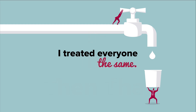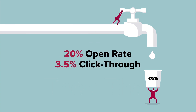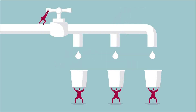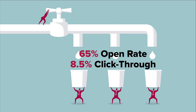The big mistake I was making with an email list growing to 130,000 was treating everyone the same. Everybody got the same autoresponder emails and the same broadcasts. I was getting a 20% open rate on average and a 3.5% click-through rate, and I thought that was pretty good. But when I finally learned the power of segmentation and implemented it, I soon saw averages of 65% open rates and an 8.5% click-through rate — all the way up to 175,000 emails. The results have been super impactful.